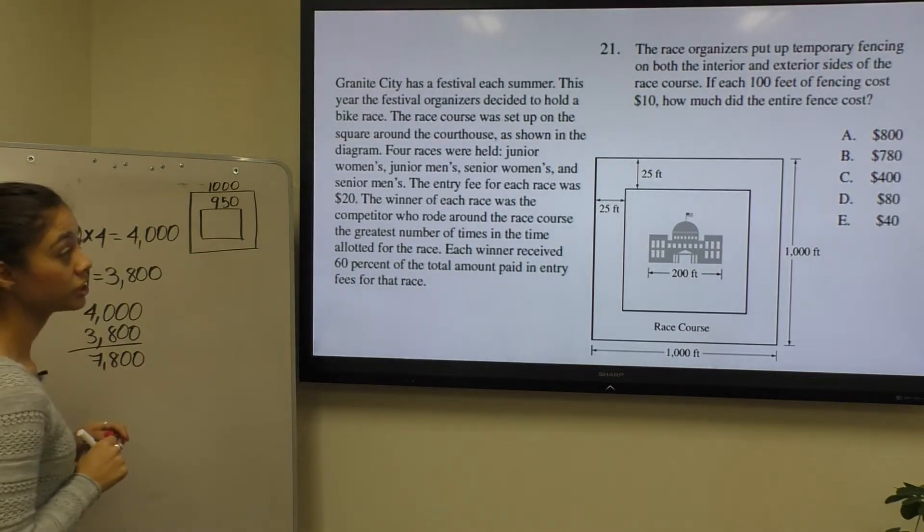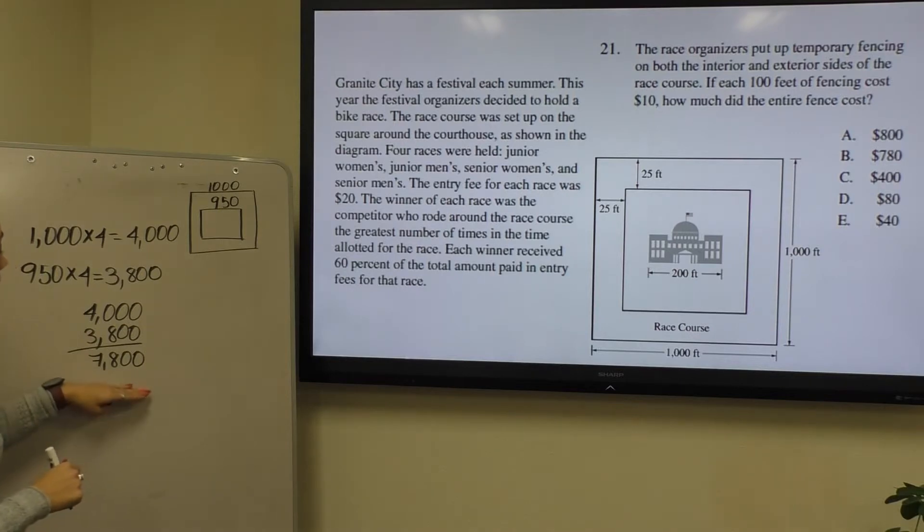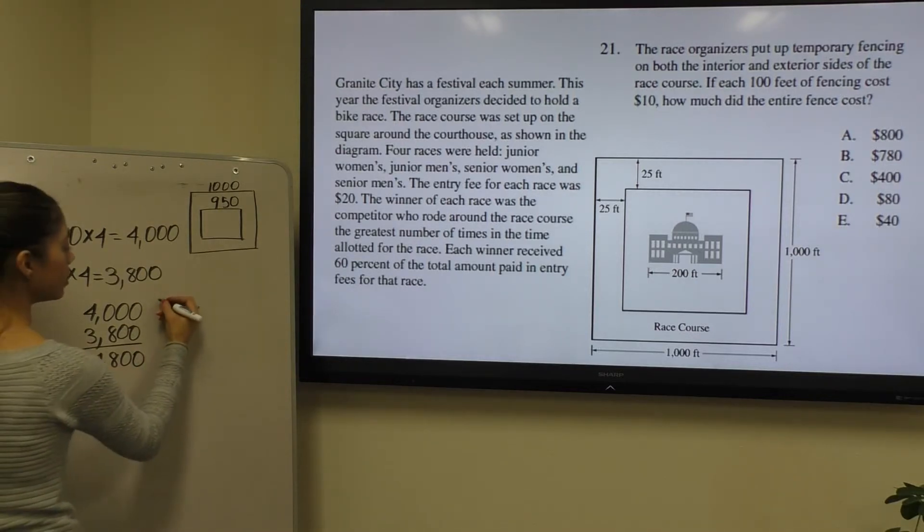Now they're saying that for each 100 feet of fencing it costs $10. So I want to know how many 100-feet units are in 7800, so I will divide 7800 by 100.